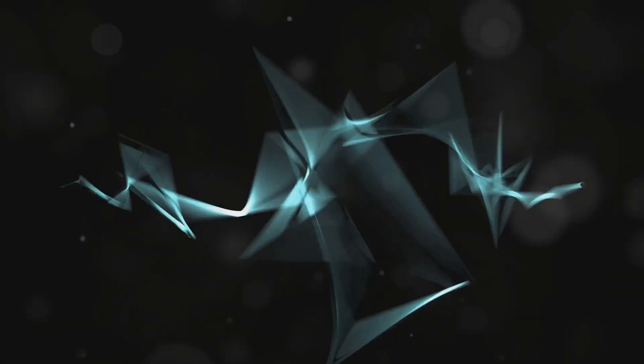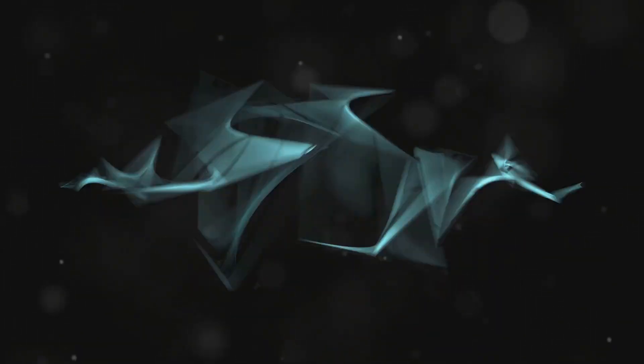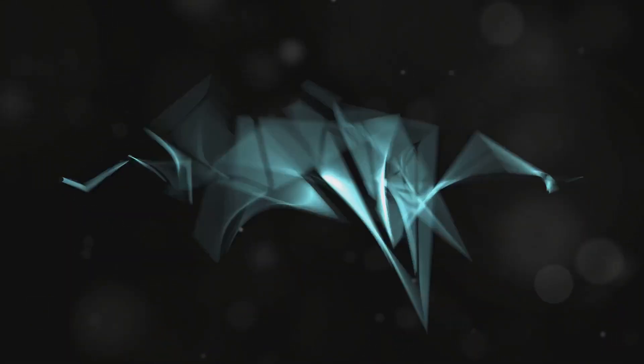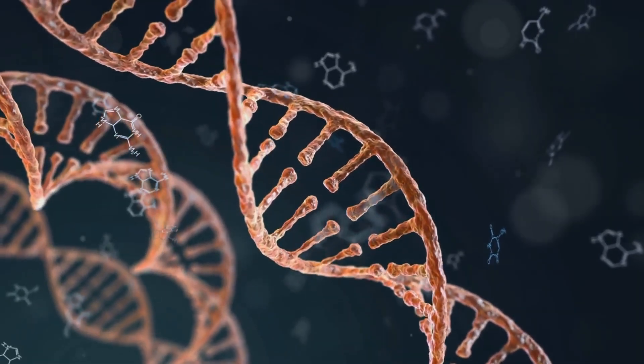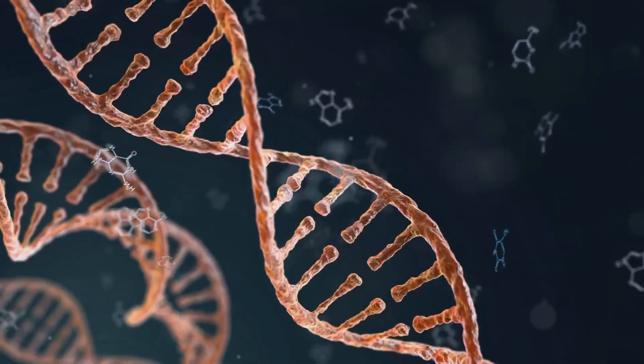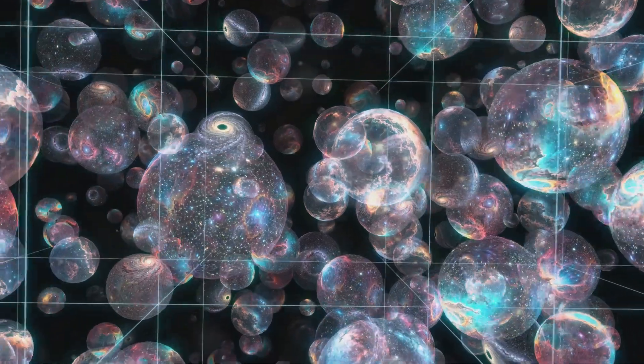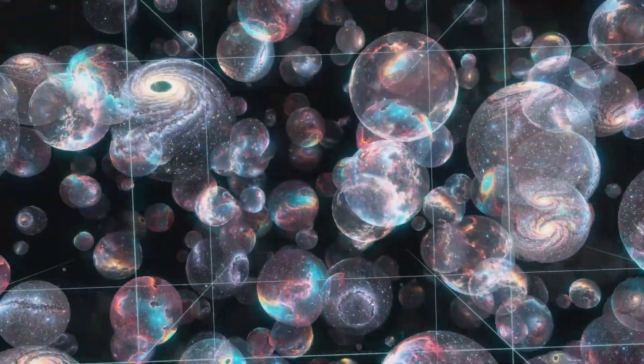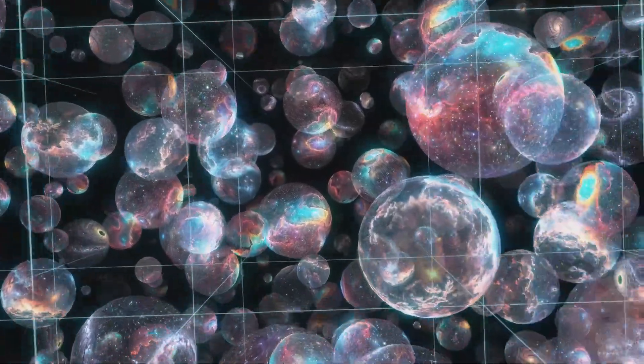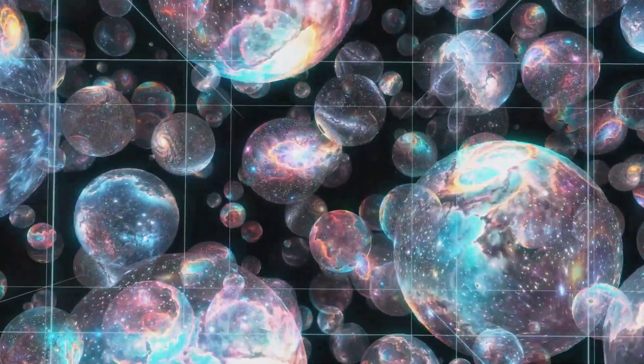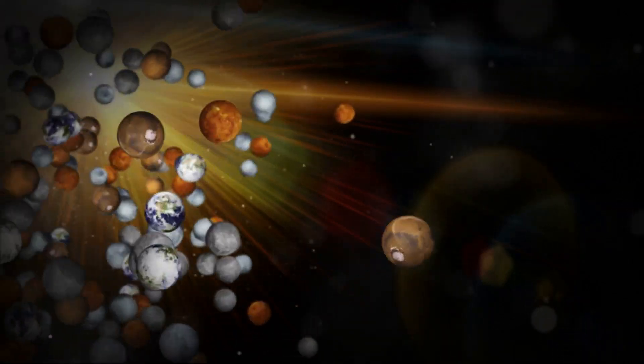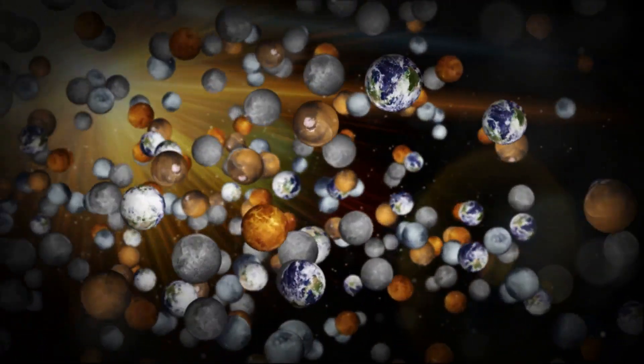Consider the implications of these constants being different. If the electromagnetic force were slightly stronger or weaker, the chemistry of atoms and molecules would be entirely different, potentially preventing the formation of complex molecules necessary for life. The balance of these forces is so delicate that even a minuscule change could render the universe lifeless. This leads to the intriguing possibility of a multiverse where countless other universes exist, each with its own set of physical laws and constants. In some of these universes, the conditions might be so different that life, as we understand it, could never arise.